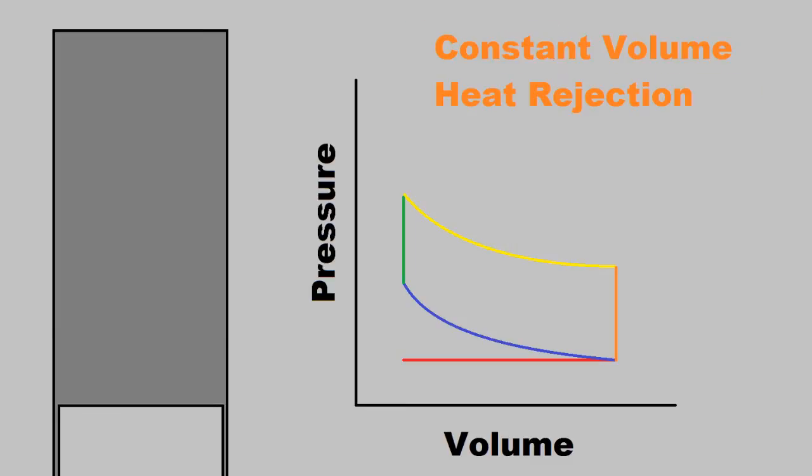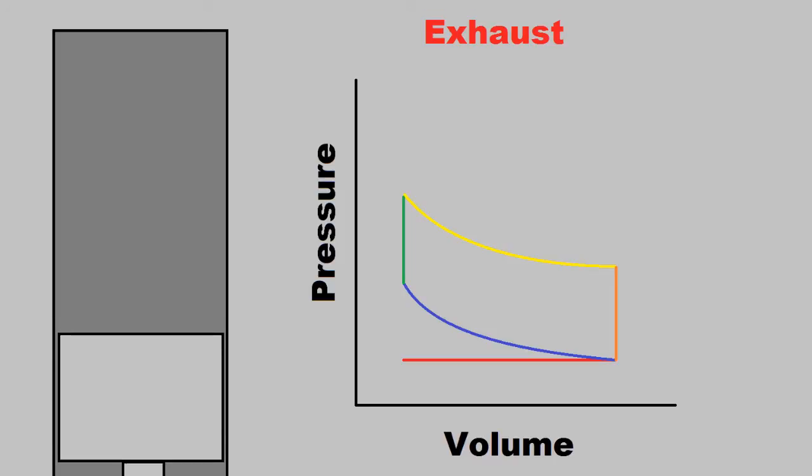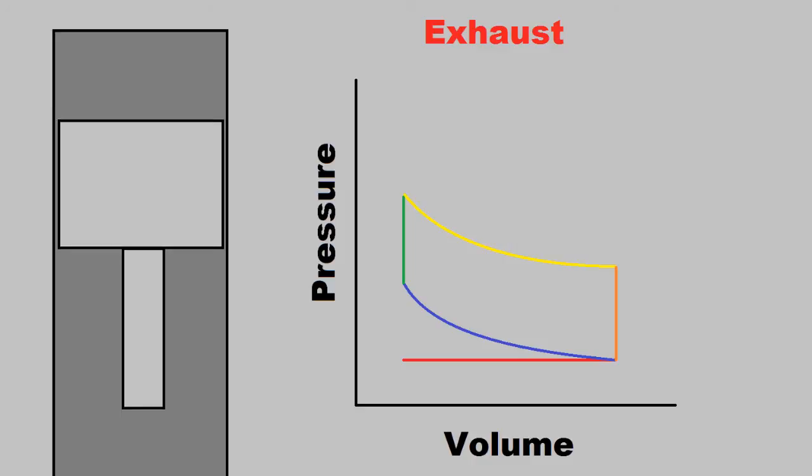Then we move on to the constant volume heat rejection, where the pressure drops. Then the final stage is the exhaust. This is where the volume goes from the max to the min to push out all the exhaust.